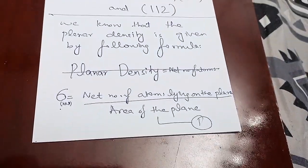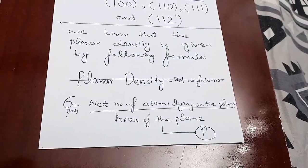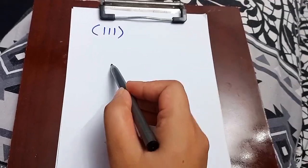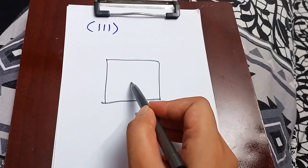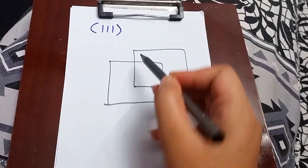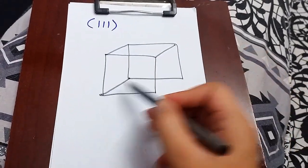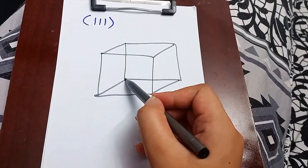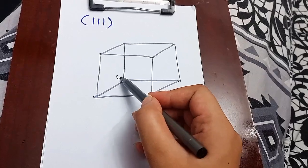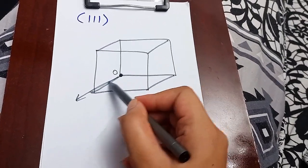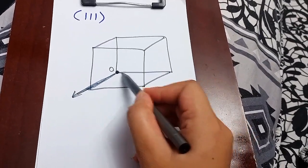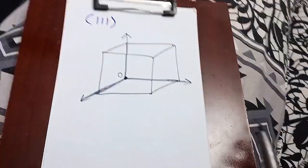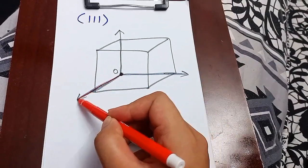This is the basic formula we will be using in each of the cases. Now let's do it for the (1,1,1) plane. The first step is to draw the cube, then we will draw the plane inside the cube. Since all of the Miller indices are positive, this is the all-positive origin. This is the X direction, this is the Y direction, and this is the Z direction.